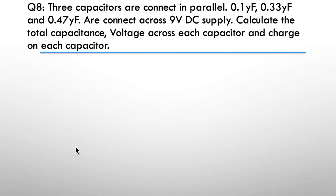Question eight: three capacitors are connected in parallel — 0.1 microfarad, 0.33, and 0.47 microfarad — connected across a 9 volt DC supply. Calculate the total capacitance, the voltage across each capacitor, and the charge on each capacitor. Hint: total capacitance equals C1 plus C2 plus C3.